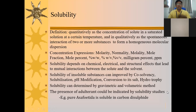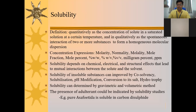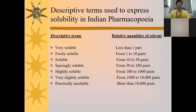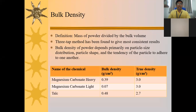Solubility is another physical constant. Some crude drugs are soluble in polar, non-polar, or semi-polar solvents. Descriptive terms used to express solubility are available in a table in the Indian Pharmacopoeia — for example, 'very soluble' and 'freely soluble'. Bulk density is defined as the mass of the powder divided by the bulk volume, expressed as grams per centimeter.